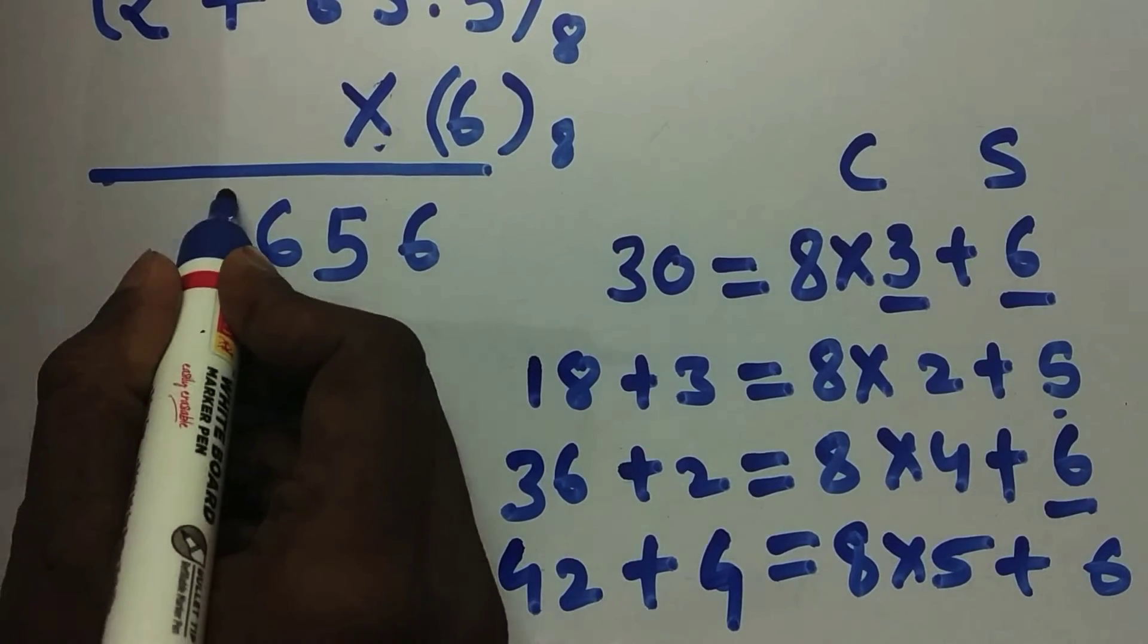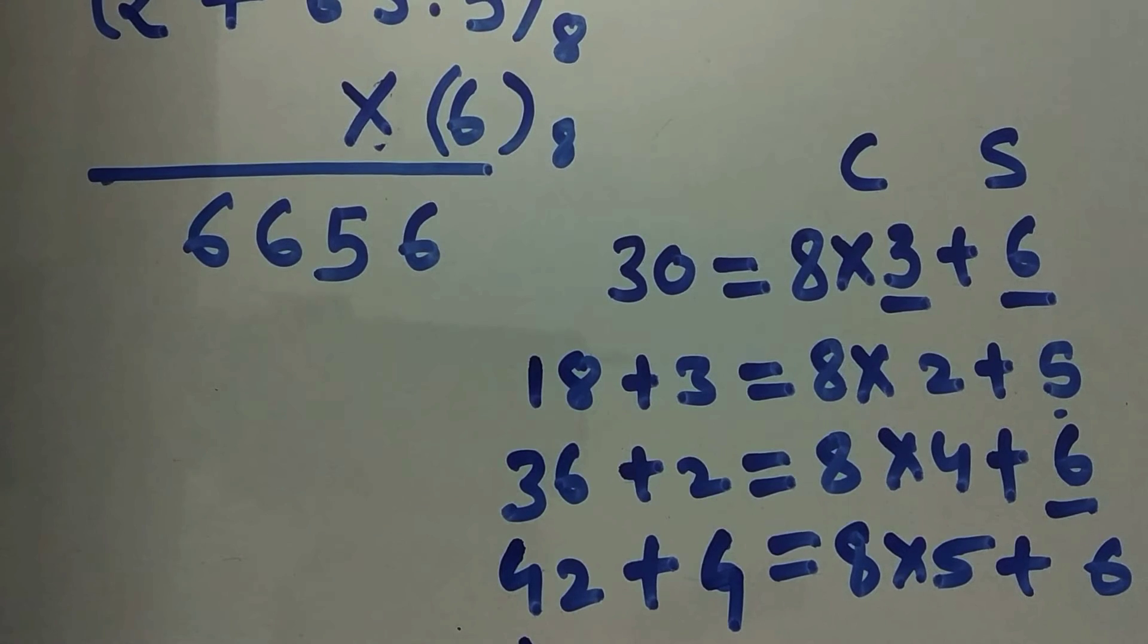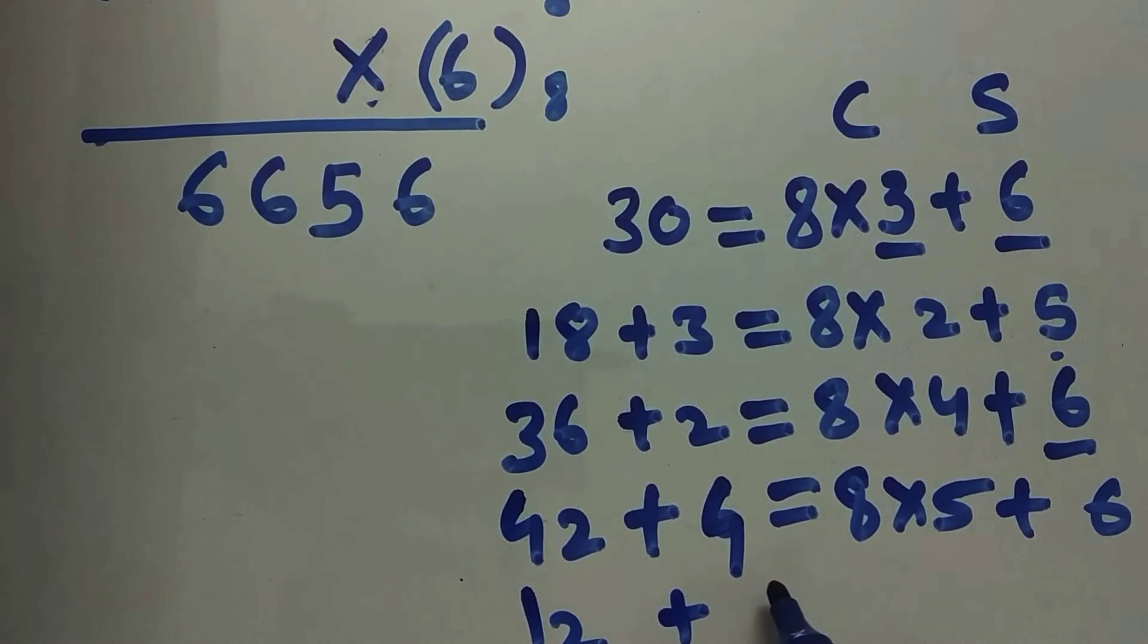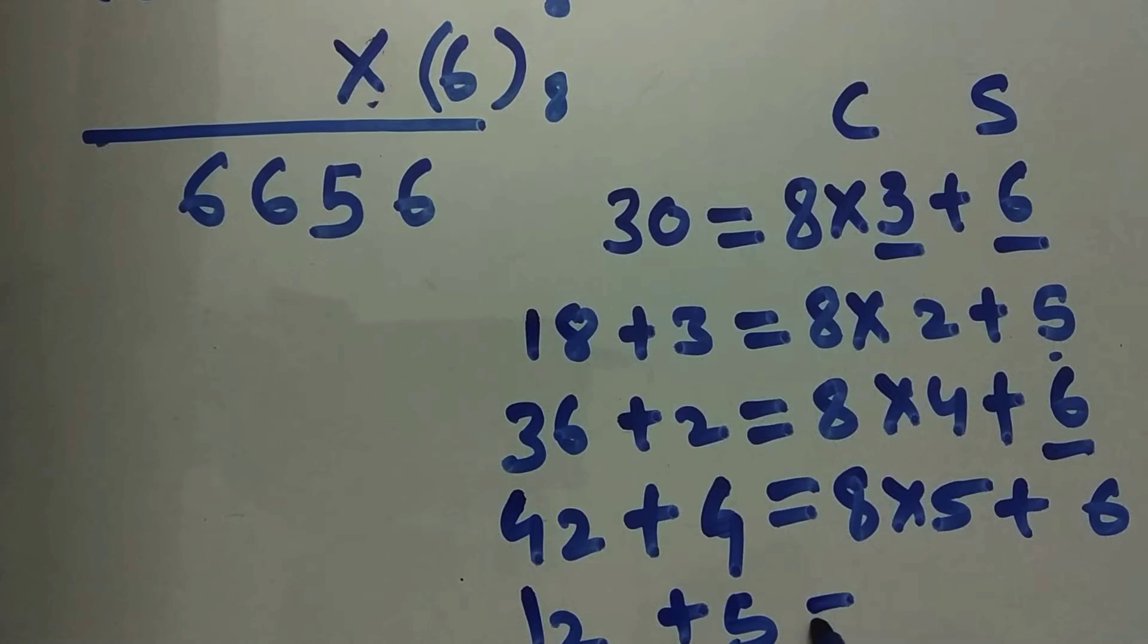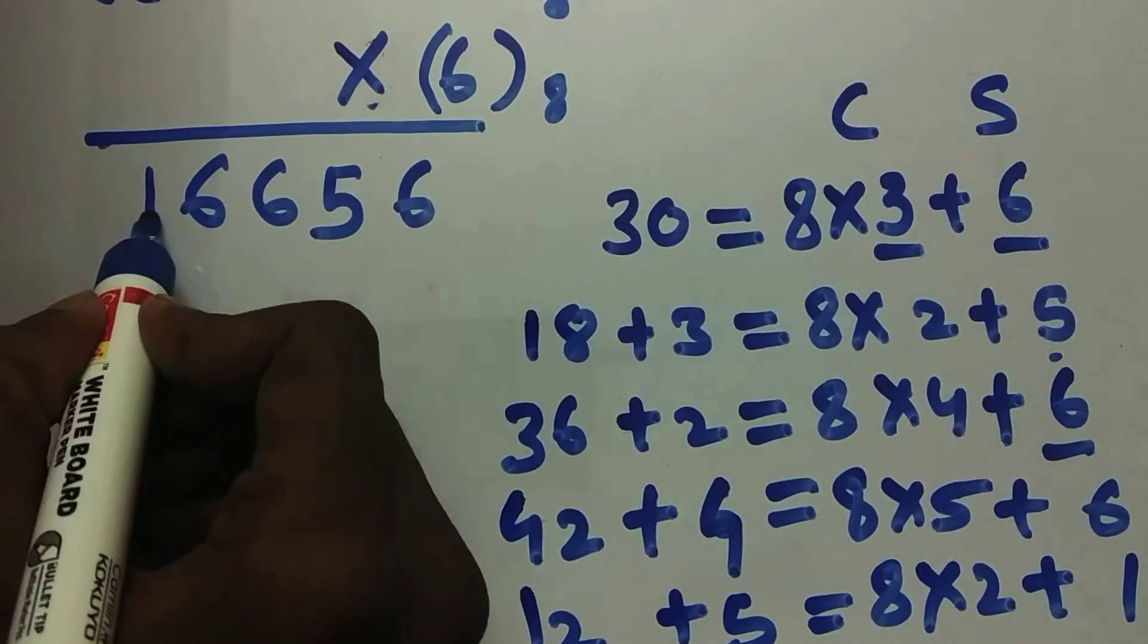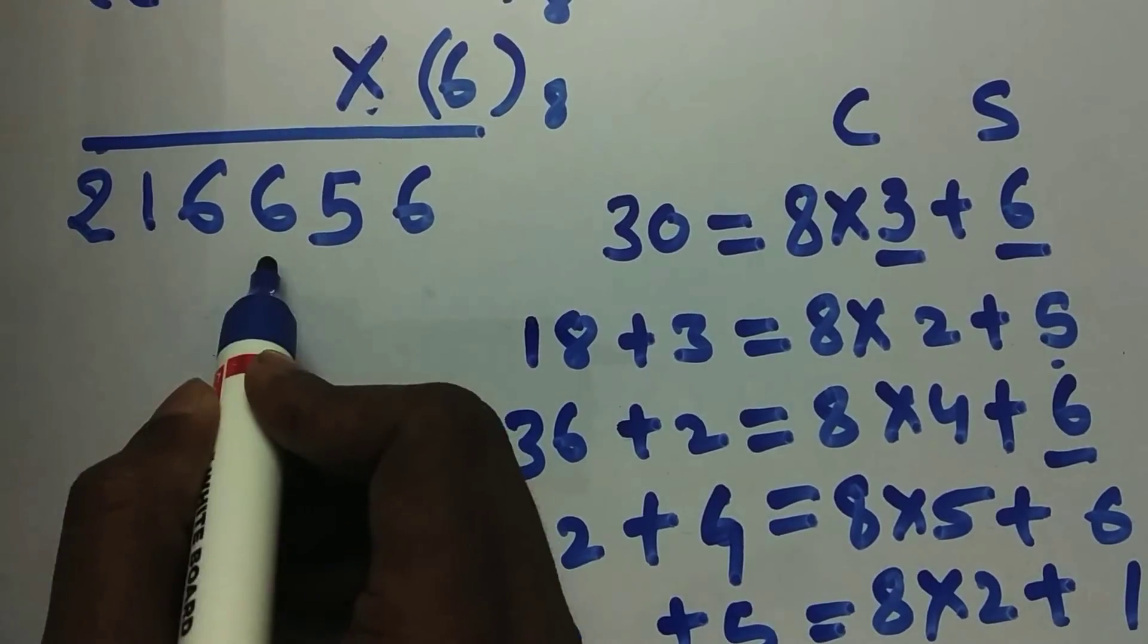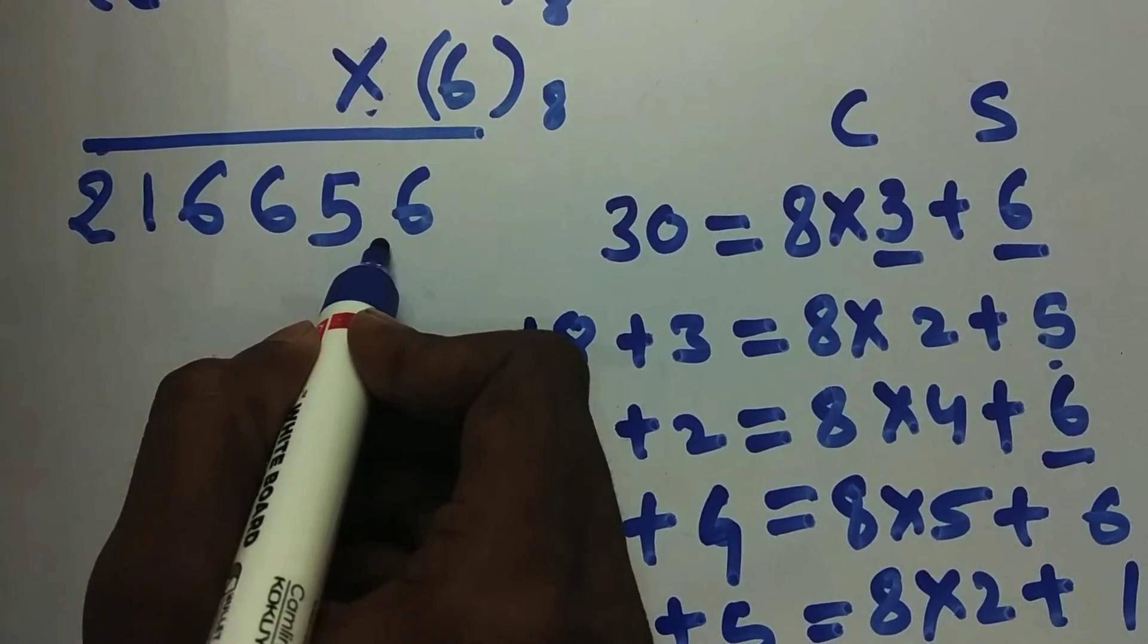Now 6 into 2, it's 12 plus carry. 12 plus 5 is 17, that's 8 into 2, 16 plus 1. So you got the result now. The carry is there, write it over here: 216656. Don't forget this dot; if you forget this dot, your entire result is wrong. So this is your answer.